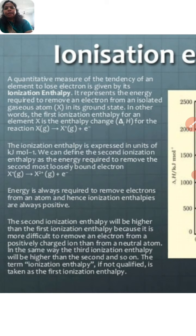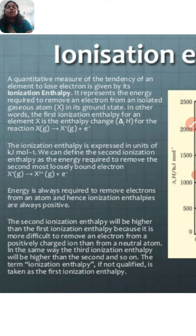Ionization enthalpy is a quantitative measure of the tendency of an element to lose an electron. It represents the energy required to remove an electron from an isolated gaseous atom. In other words, the first ionization enthalpy for an element X is the enthalpy change (ΔH) for the reaction where X in the gaseous state is converted to the X⁺ ion and an electron.